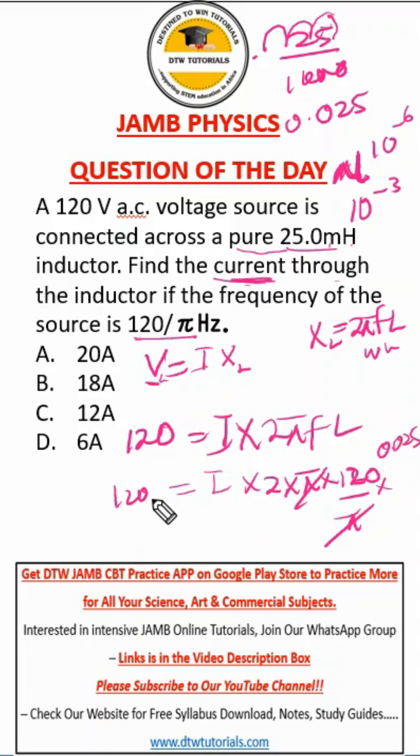Here, this π will cancel this π. Remember we are going to multiply all this and divide by 120 because we're looking for I. So everything here will be divided by 120.